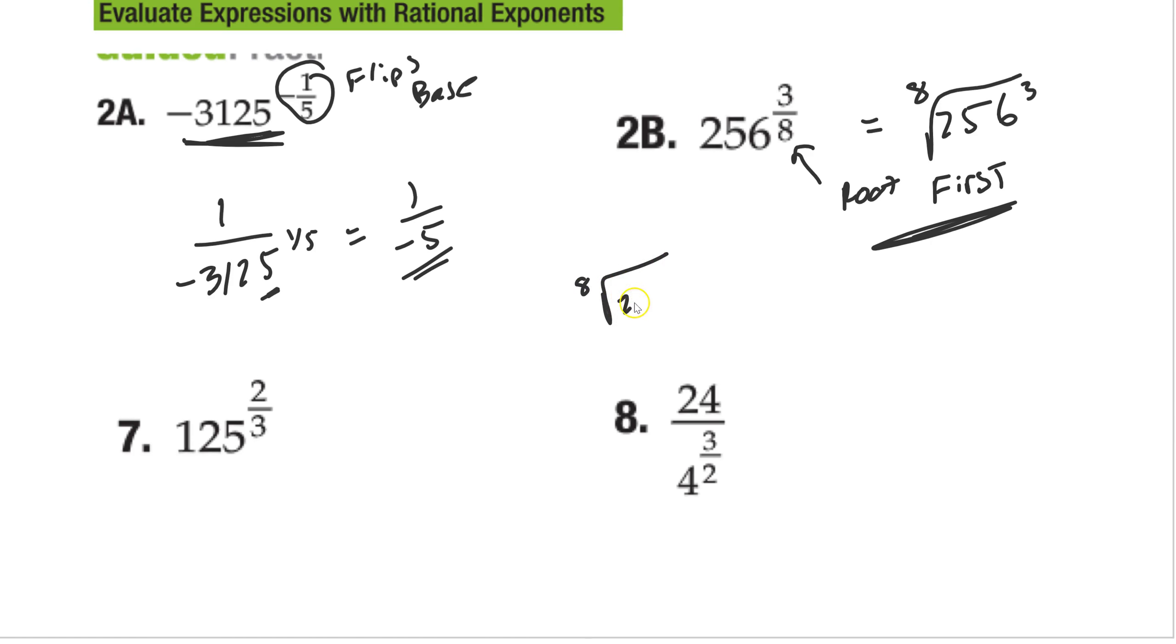So we're going to write it like this. The eighth root of 256, then we're going to do that to the third power. Eighth root of 256, again, not one that I've memorized, but you can think about it logically. Try to figure it out. It's 2, and 2 to the third is 8. So again, we do the root first.